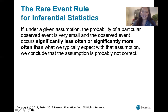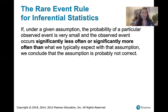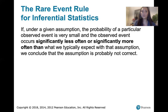Let's try to break that down a little bit. Looking at the first part: if under a given assumption — so we're assuming something is true — then under that assumption, the probability of a particular observed event is some amount. If that probability is very small based on that assumption, and then we observe the event occurring significantly more or less often than we would expect given that assumption.